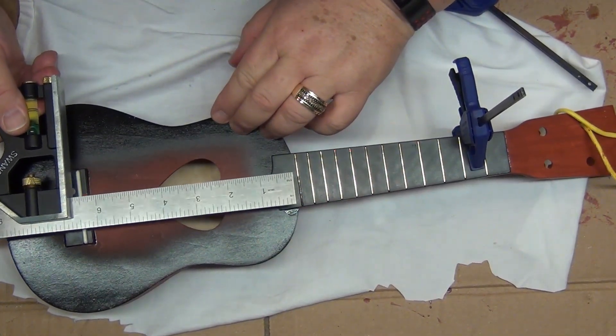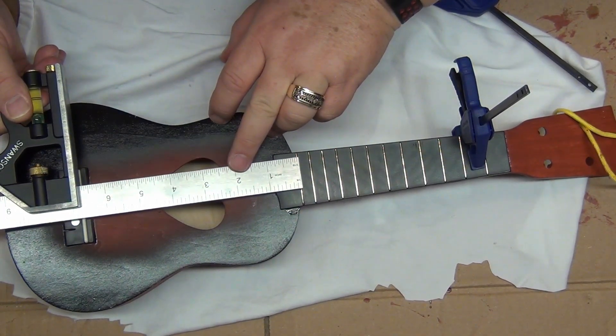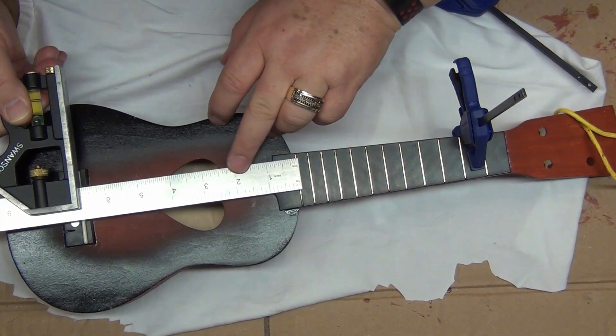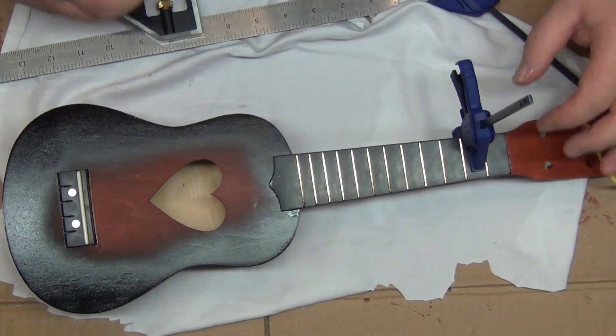Then I ensured the proper placement. The proper placement of the last fret, or the 12th fret, is very critical to keep the ukulele in tune all the way down the fretboard.